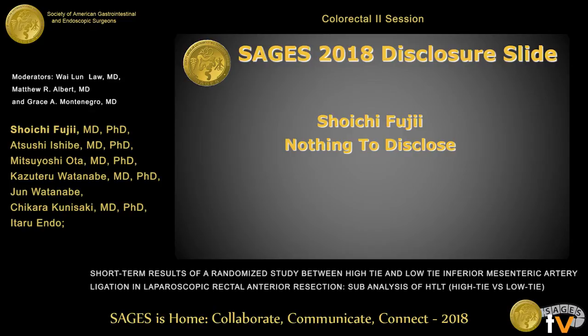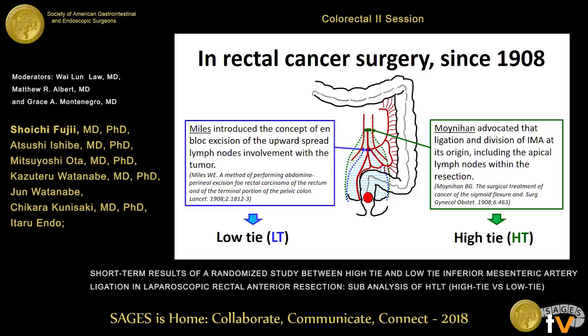In rectal cancer surgery, there has been controversy about the optimal level of IMA ligation for 100 years or more. Two great surgeons advocated lymph node dissection for upward spread of cancer in the same year. Myers' method corresponded to the low-tie technique, and Moynihan's was the high-tie technique.